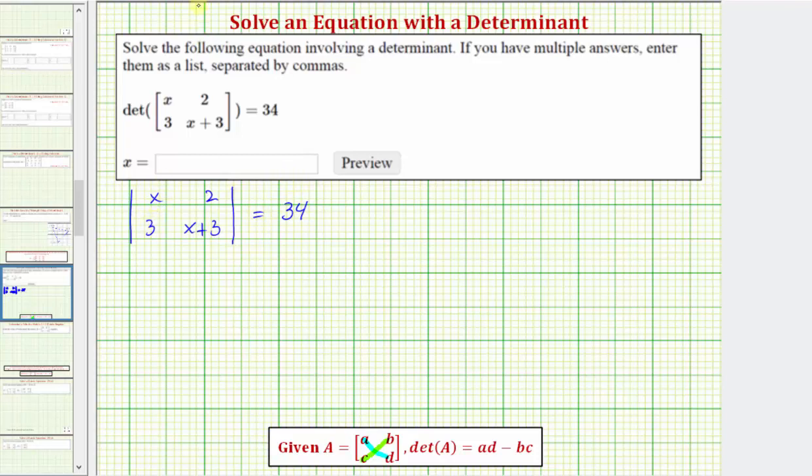So evaluating the determinant, we have x times the quantity x plus 3 minus 2 times 3. So x times the quantity x plus 3 minus 2 times 3 must equal 34.